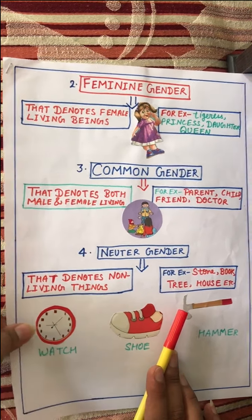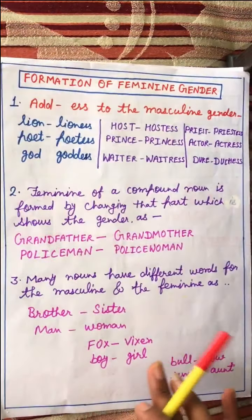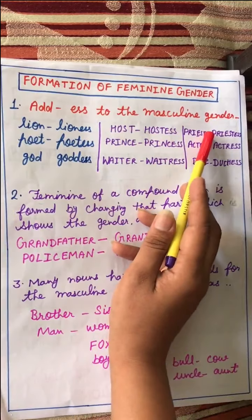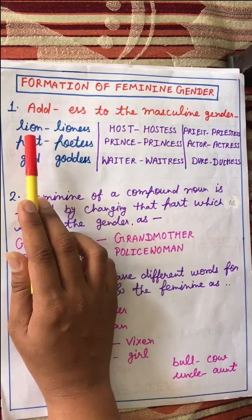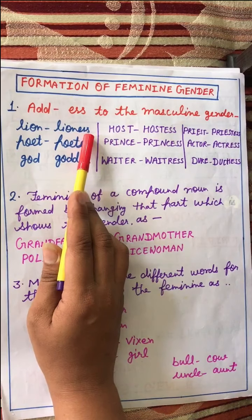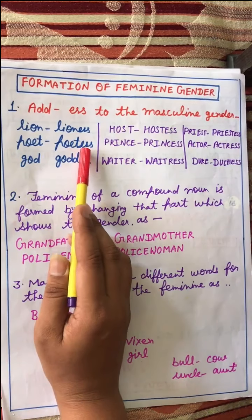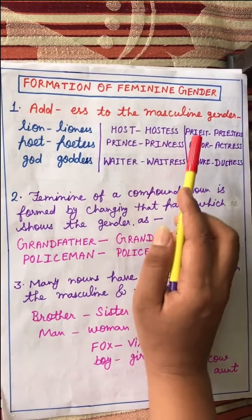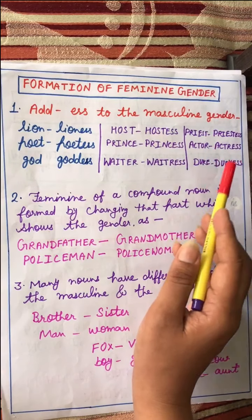So to summarize: masculine is for male, feminine is for female, common is for both, and neuter gender is for non-living things. Now, students, we will learn the formation of feminine gender. For example, lion — lion is masculine and its feminine is lioness. Poet becomes poetess; god becomes goddess; host becomes hostess; prince becomes princess; waiter becomes waitress; actor becomes actress; duke becomes duchess. These are all examples of forming feminine gender from masculine.